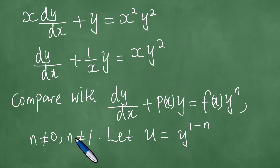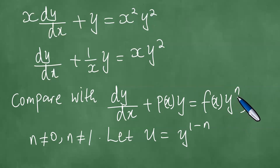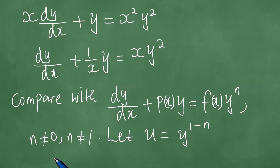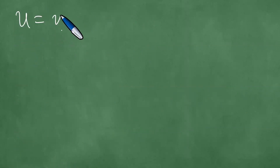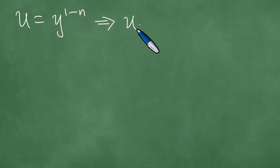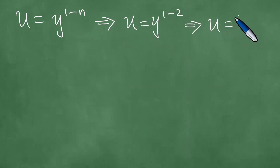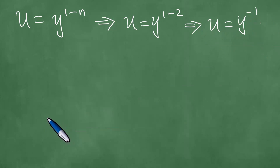We proceed to solve this differential equation in detail. By comparison with the Bernoulli equation, there is y to the power n, and here we have y squared, which means n equals 2. So u is equal to y to the power 1 minus n, which gives u equal to y to the power 1 minus 2, that is y to the power minus 1. We will now differentiate this.